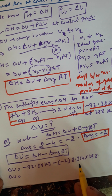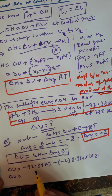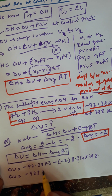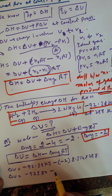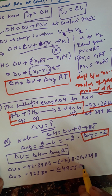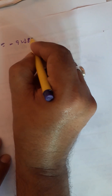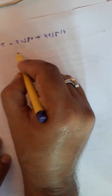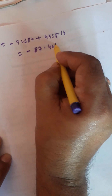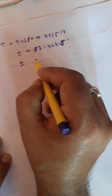यह सारी terms joules में आती हैं क्योंकि R gas constant joules में है, लेकिन -92.38 kilojoule में है। तो इसको joule में बदलेंगे — 1000 से multiply करेंगे — यह value -92380 joules बनेगी। Solve करो: (-2) × 8.314 × 298 = -4955.14 joules। Next step: -92380 - (-4955.14) = -92380 + 4955.14 = -87424.86 joules। Kilojoule में: ΔU = -87.424 kJ।